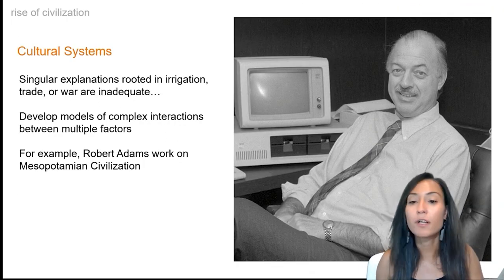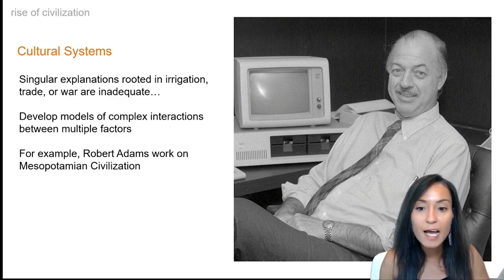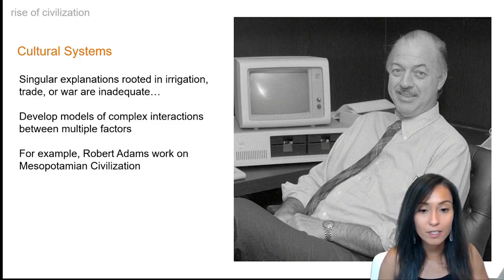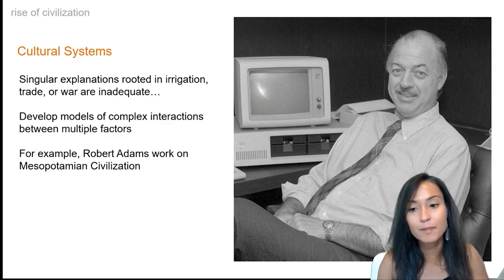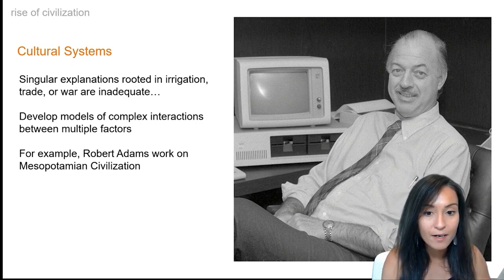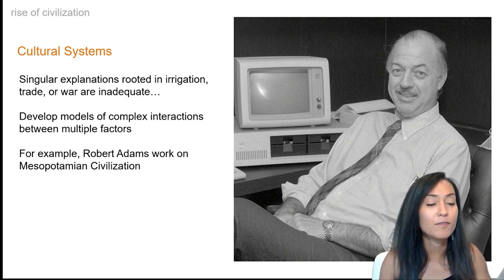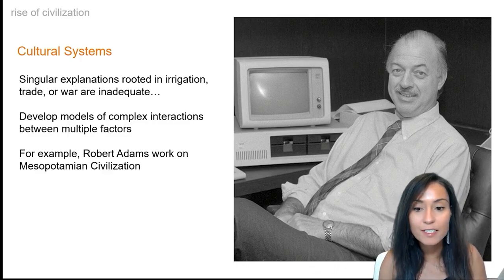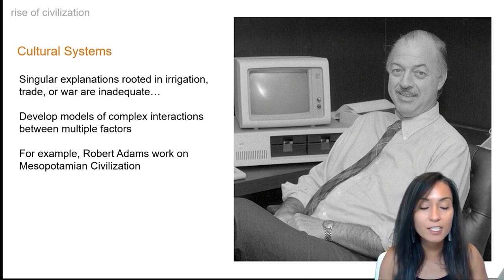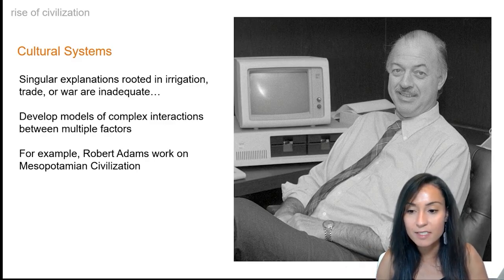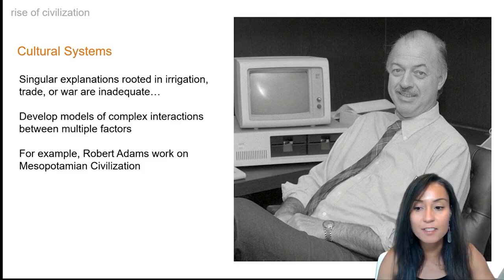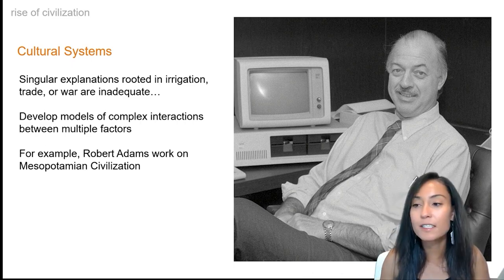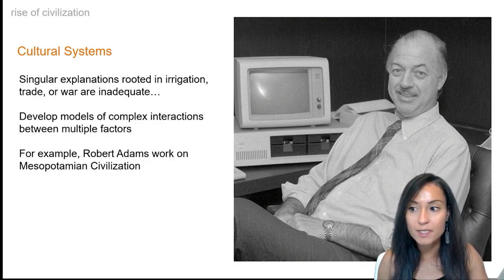Today, most archaeologists agree that the emergence of early civilizations was a gradual process which occurred during a period of major social and economic change, similar to what's described in Carneiro's coercive theory. Singular explanations like trade, irrigation, or warfare are largely inadequate for explaining the development of complex states in multiple different parts of the world around about the same time. Recent theories based on systems models draw on complex interactions between these different factors. A key figure in these sorts of cultural systems approaches is Robert Adams, who worked on Mesopotamian civilizations.